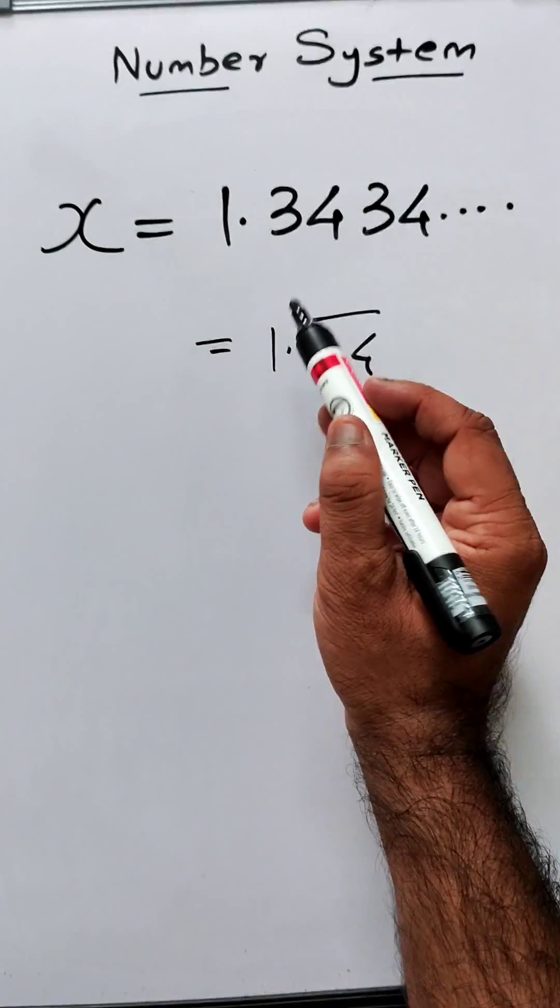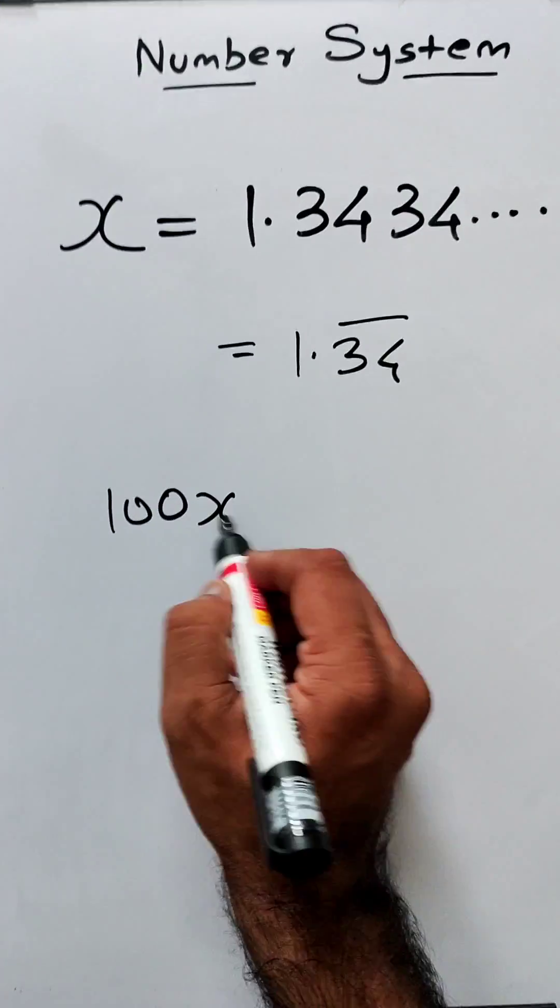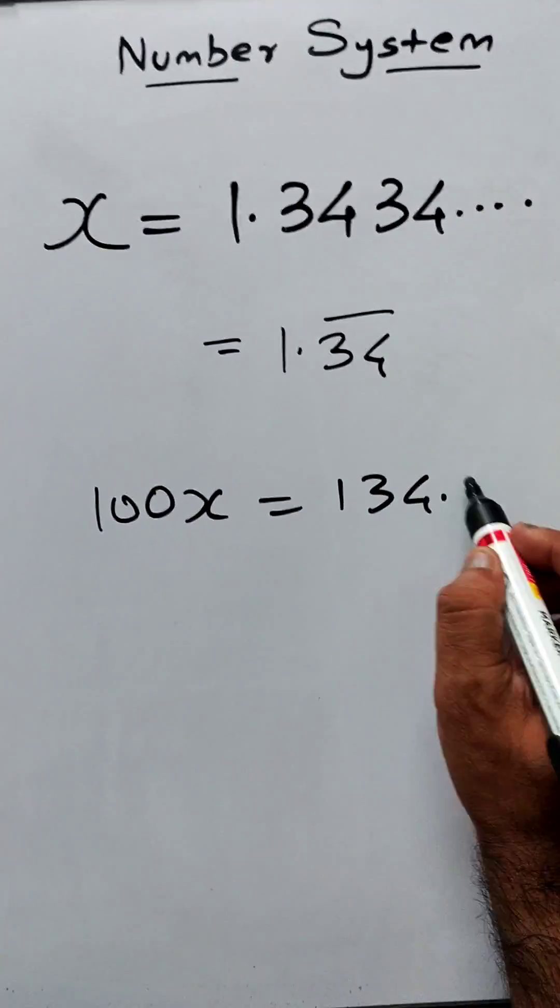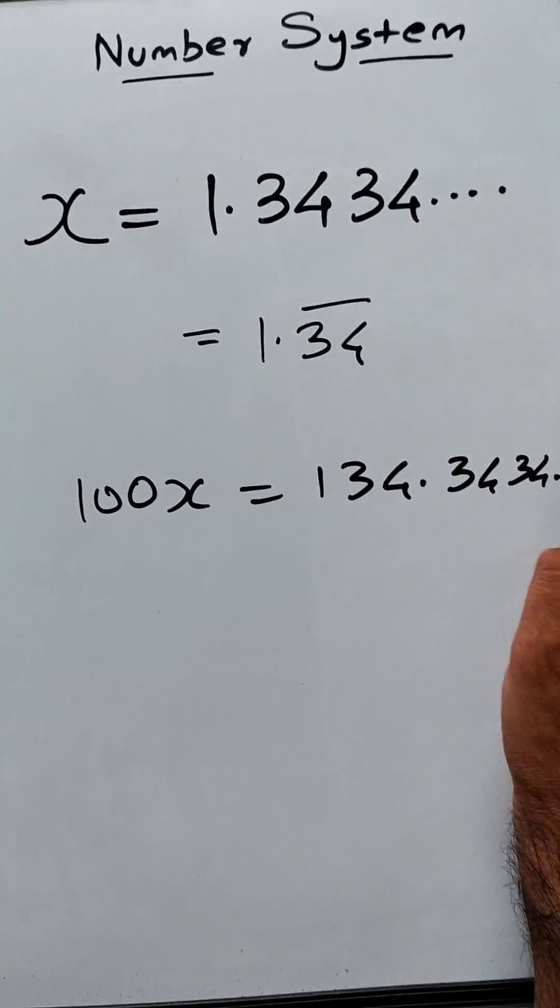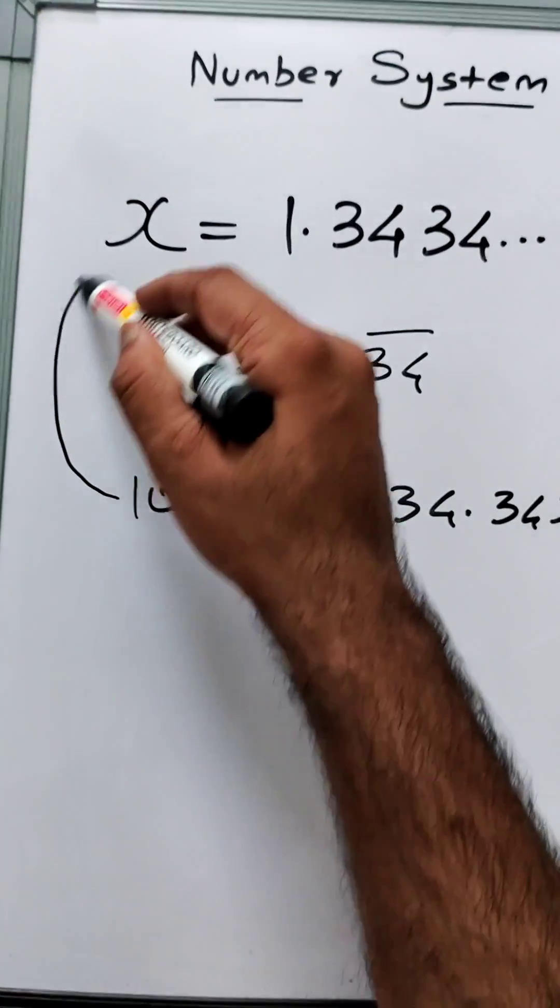I can see two digits are repeating. What I'll do is multiply by 100 because two digits are repeating. I get 134.3434... And now what we'll do is subtract x from the value of 100x.